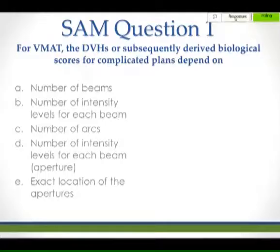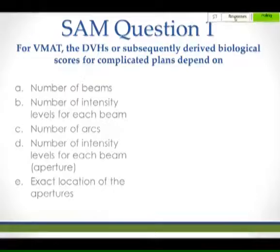For a SAM question: For VMAT, which factor determines plan quality? Options include: A) number of beams, B) number of intensity levels for each beam, C) number of arcs, D) number of intensity levels for each beam, and E) exact locations of the apertures. The answer is C — more than two arcs are sometimes necessary to achieve a high-quality plan.